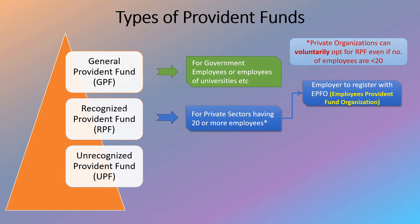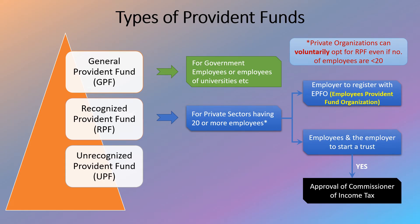Private organizations have two options to open their RPF account. First, the employer can register with EPFO, that is Employees Provident Fund Organization. Or the employees and the employer can start a private trust and contribute funds to it. If such private trusts obtain approval of the Commissioner of Income Tax, then such funds would be regarded as Recognized Provident Fund, else it would be regarded as UPF, that is Unrecognized Provident Fund.